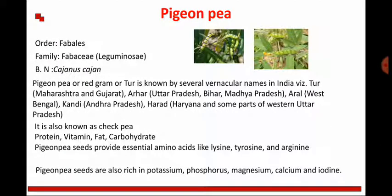The second legume is Pigeon Pea, also known as Toor, with the botanical name Cajanus cajan, belonging to the family Fabaceae. It is also known by different vernacular names: in Maharashtra and Gujarat it is called Tur, in Uttar Pradesh, Bihar, and Madhya Pradesh it is called Arhar. It contains protein, vitamins, and carbohydrates, and provides amino acids like lysine, tyrosine, and arginine. It is also rich in macronutrients such as potassium, phosphorus, magnesium, calcium, and iodine.